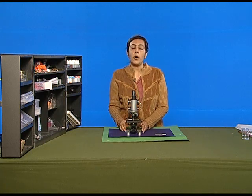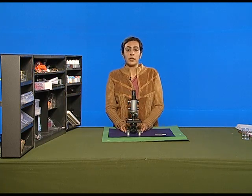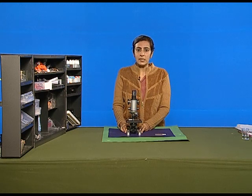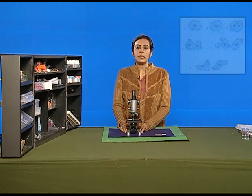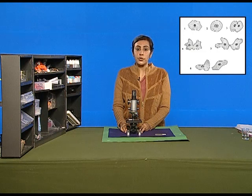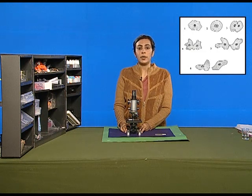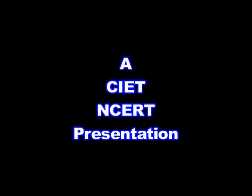What do we observe? We observe the parent body divides and results in the formation of two small new amoeba. These two new amoeba are called daughter cells, and binary fission is a type of reproduction seen in amoeba.